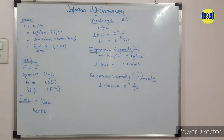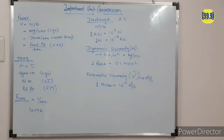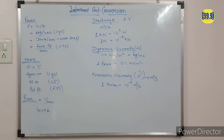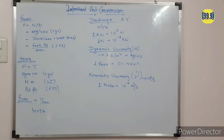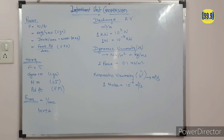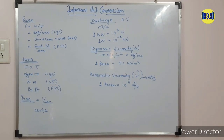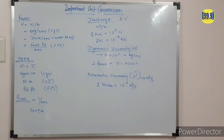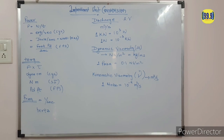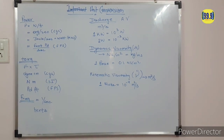Now come to power. The CGS unit of power is erg per second, the MKS unit is Watt (Joule per second), and the FPS unit is foot-pound per second. For torque: the CGS unit is dyne·centimeter, the SI unit is Newton·meter, and the FPS unit is pound-foot. For frequency, the unit is Hertz (1 per second), and it is the same across CGS, SI, and FPS systems. For discharge, which is area times velocity, the SI unit is meter cube per second.